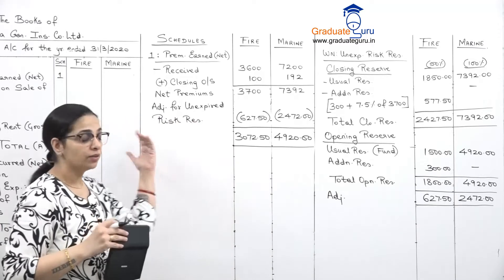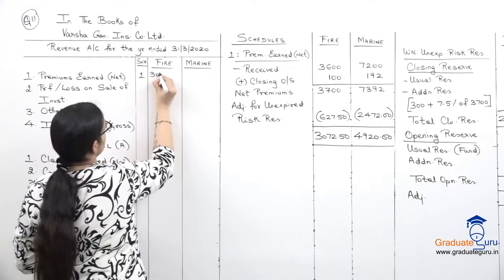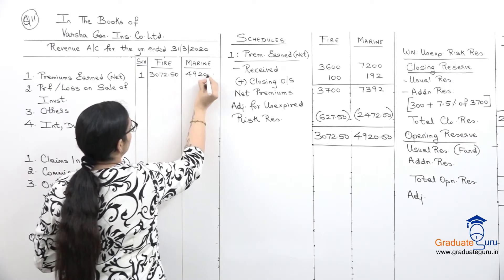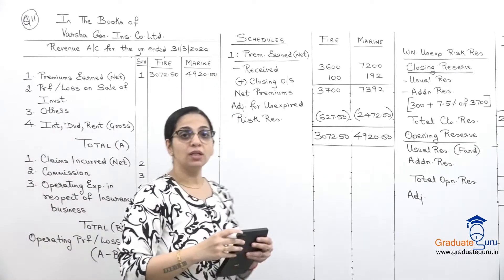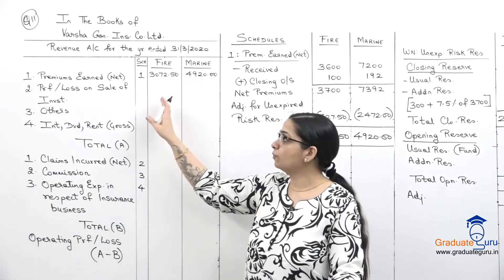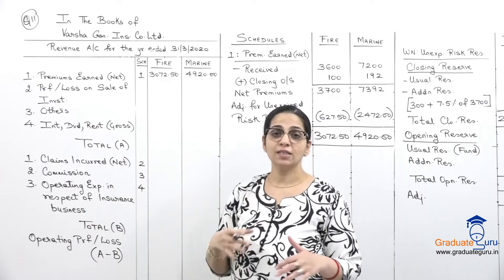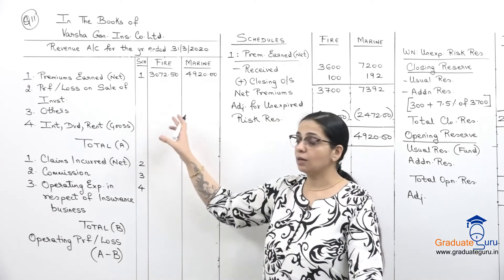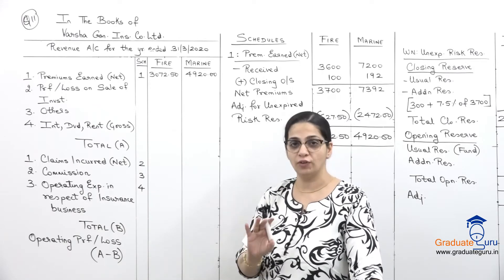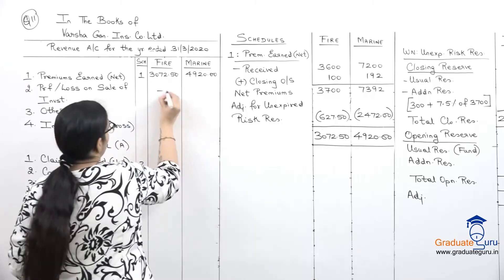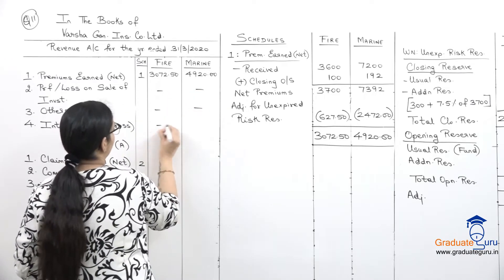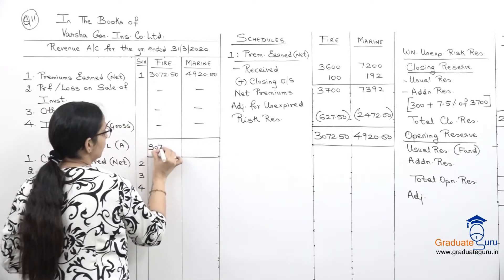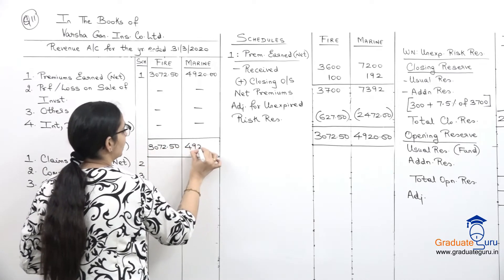As usual we have to compare closing with opening and get the difference, that is our adjustment. 2,427.5 minus 1,800 we get 627.50 and for marine 7,392 minus 4,920 we get 2,472. In both situations closing is more than opening, so negative figure in our schedule. So 3,700 minus 627.5 we get 3,072.50 and for marine we get 4,920. This is what we will take to our revenue account.